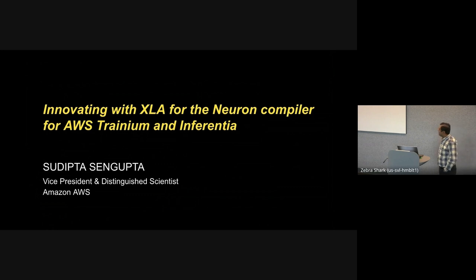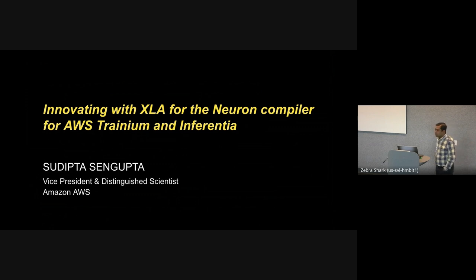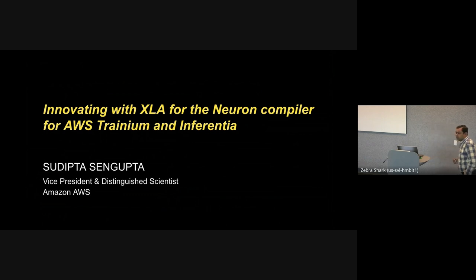The work is focused on the Neuron compiler for AWS Trainium and Inferentia. The work that has been contributed back to open source is a joint effort between the Neuron team at AWS, the Google XLA team, and the Meta PyTorch team — and members from all three teams are present in the audience today.